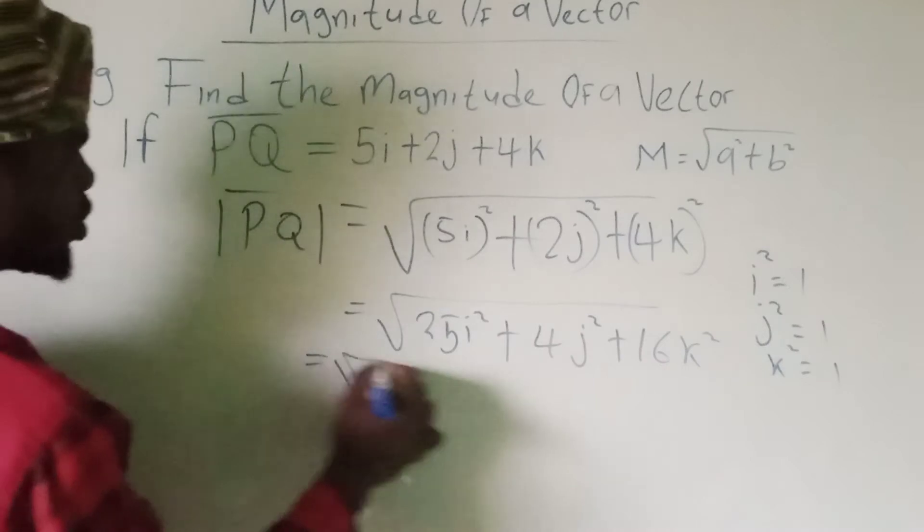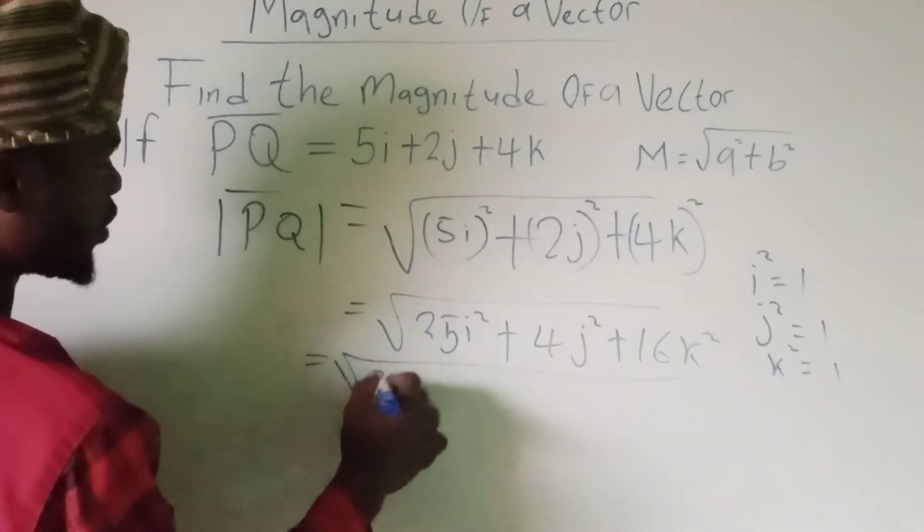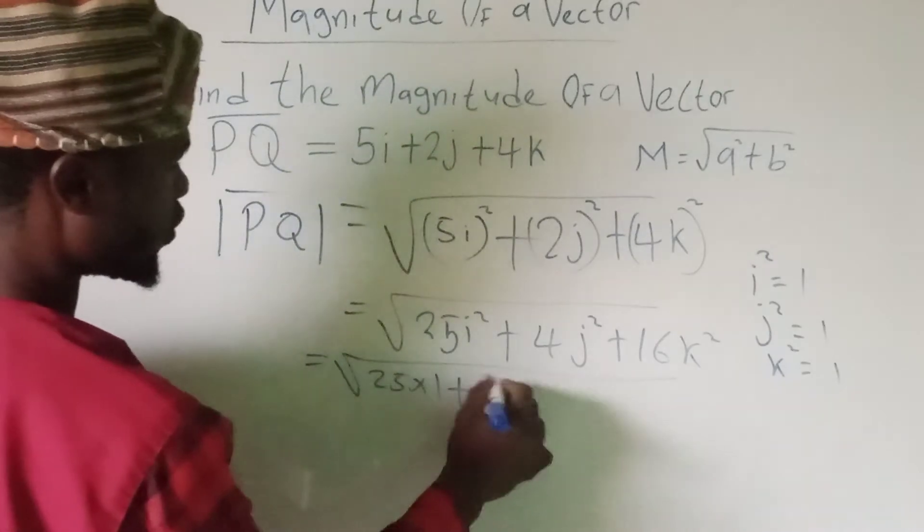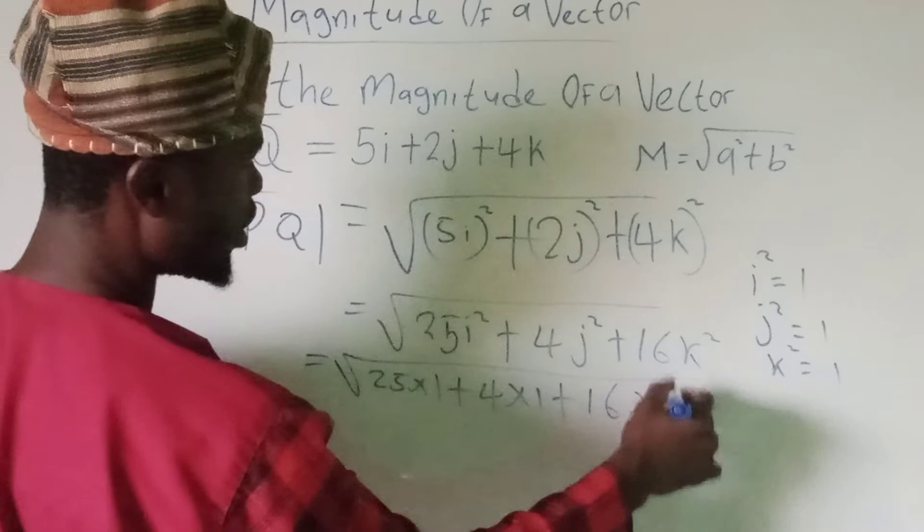Now we have square root of 25 multiply by 1 plus 4 multiply by 1 plus 16 multiply by 1.